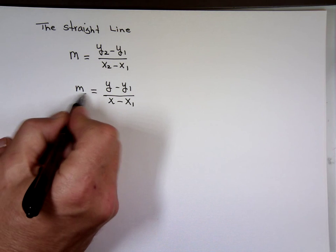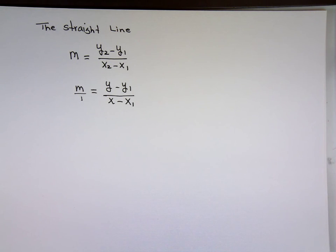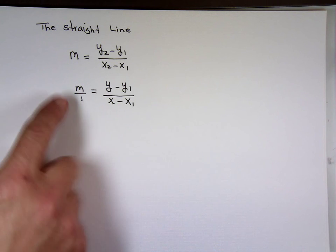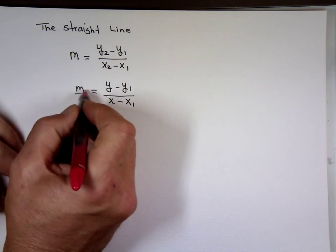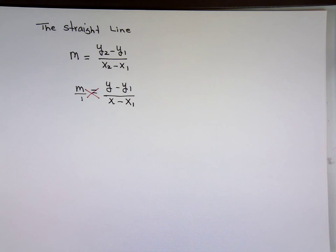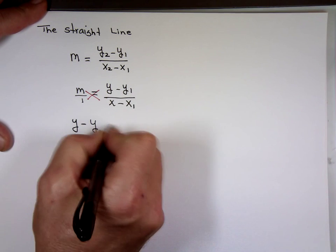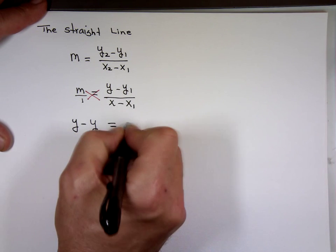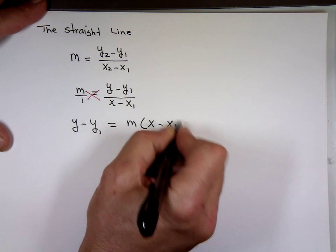The m is m over 1. Notice you have a fraction on the left and a fraction on the right. One of the easiest ways to solve an equation with one fraction on each side is to cross multiply. So if you cross multiply, you get y minus y sub 1 equals m times x minus x sub 1.